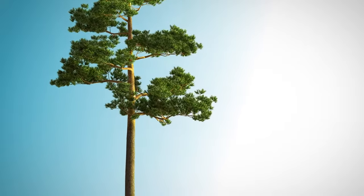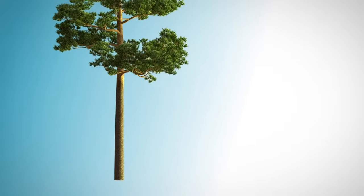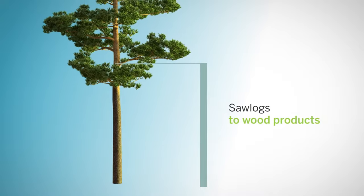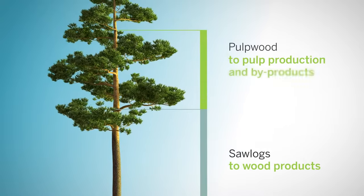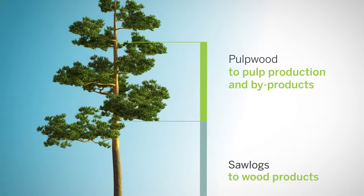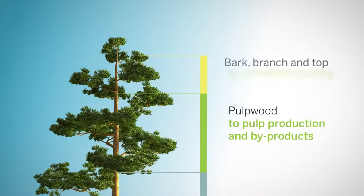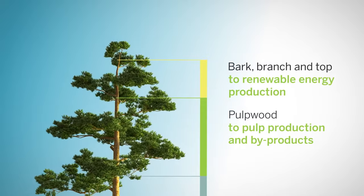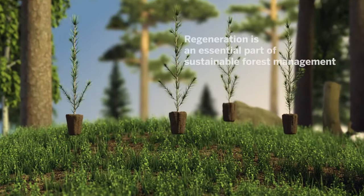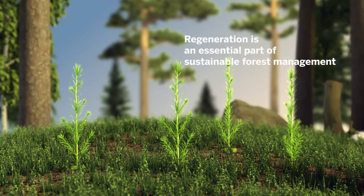Metza Group uses every part of the tree. The stronger, more robust parts like the trunk are turned into wood products, while the thinner parts, like smaller branches, are used to make pulp, which is then turned into paperboard. Anything that's left over is used for renewable energy production. For every fully grown tree we use, three to four new seedlings are planted.